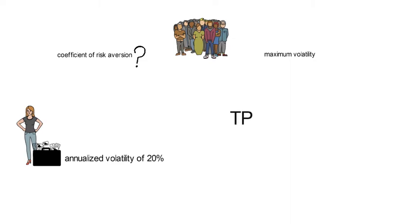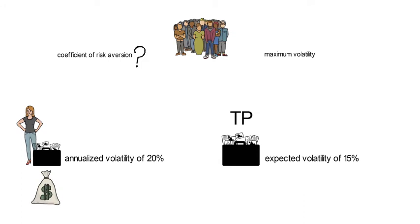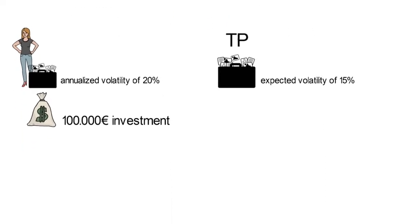Also assume that the tangency portfolio has an expected volatility of 15%, and assume in addition that Pauline wants to invest 100,000 euros. Now you therefore know that y square times the variance of the TP portfolio needs to be equal to the variance that Pauline is willing to take. Now you solve for y star. And you see, it just coincides with the ratio of the volatility that Pauline wants to hold in her portfolio divided by the volatility of the tangency portfolio.